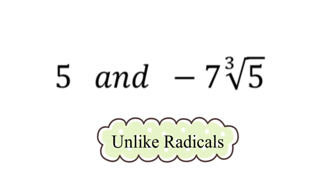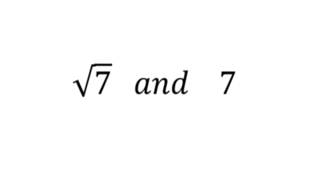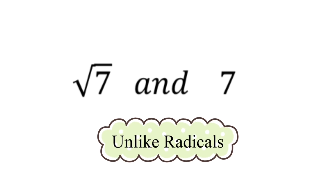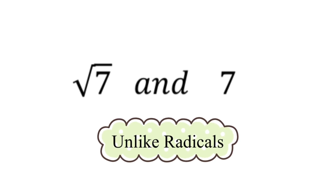Now let's move on to the next example. Both values are 7, but one is a whole number while the other has a square root on it, so we can say that these two are unlike radicals.